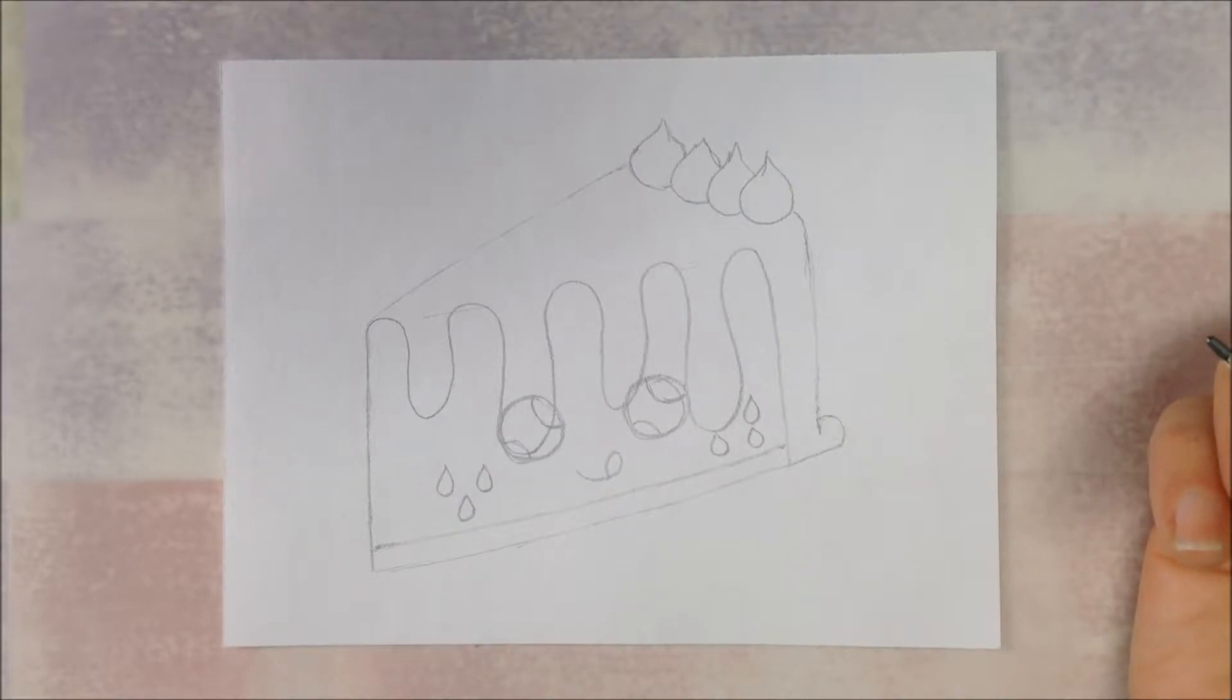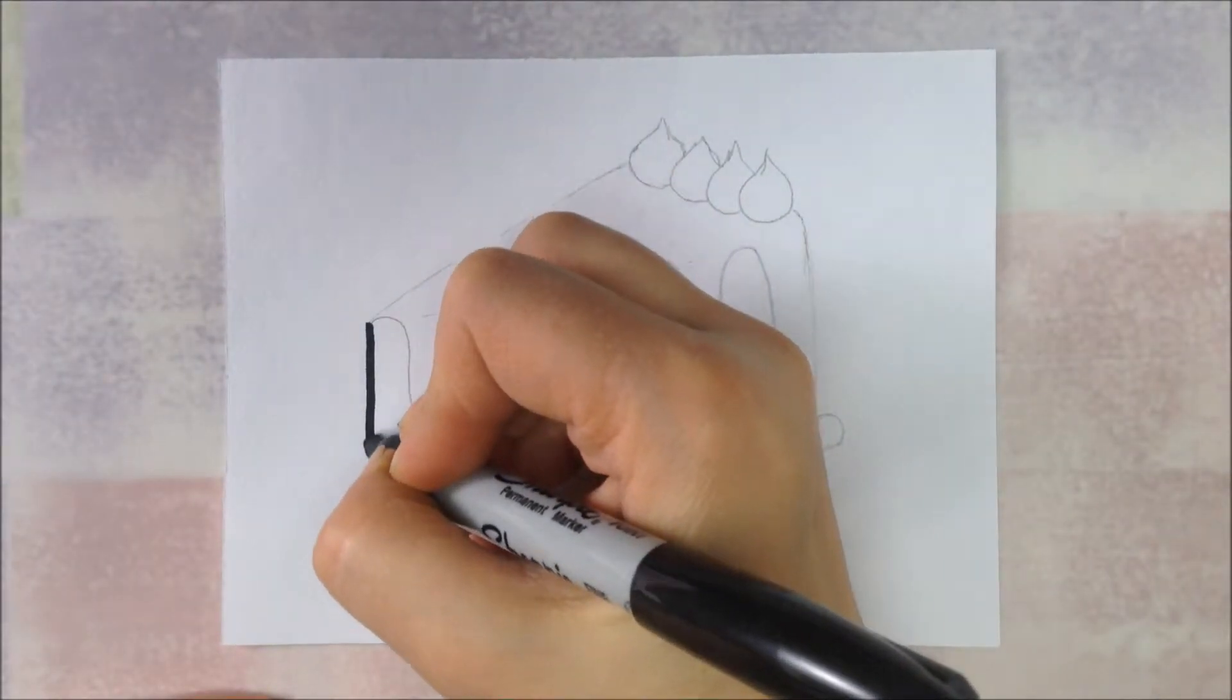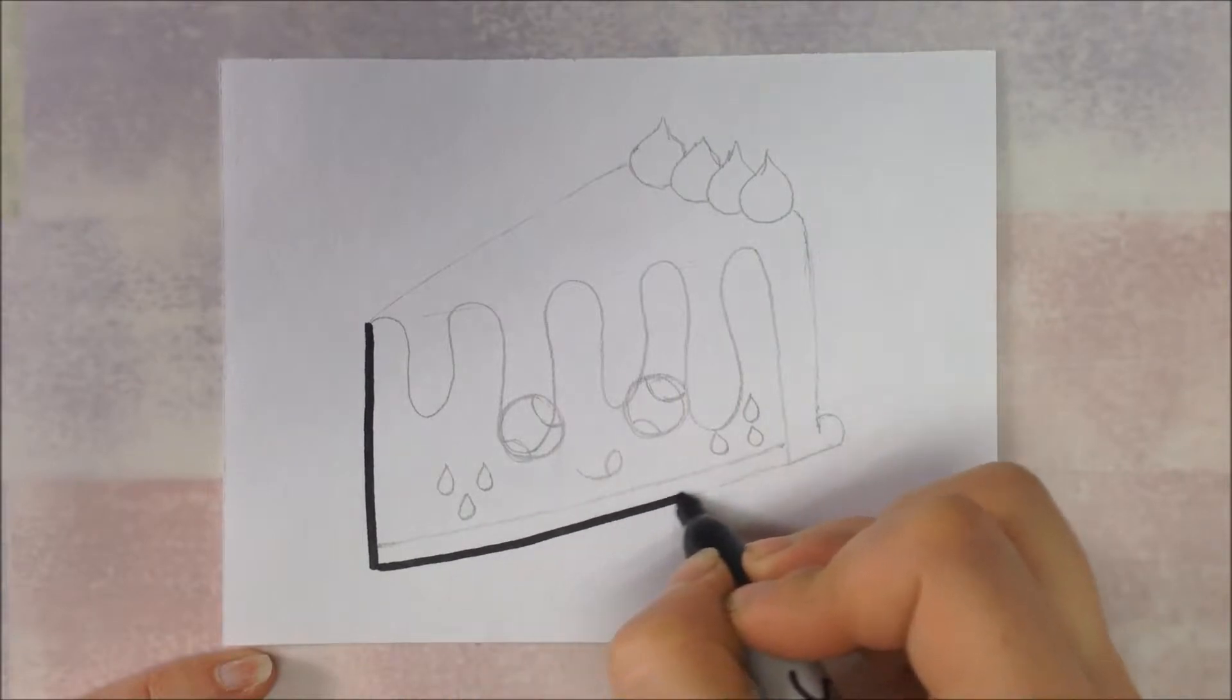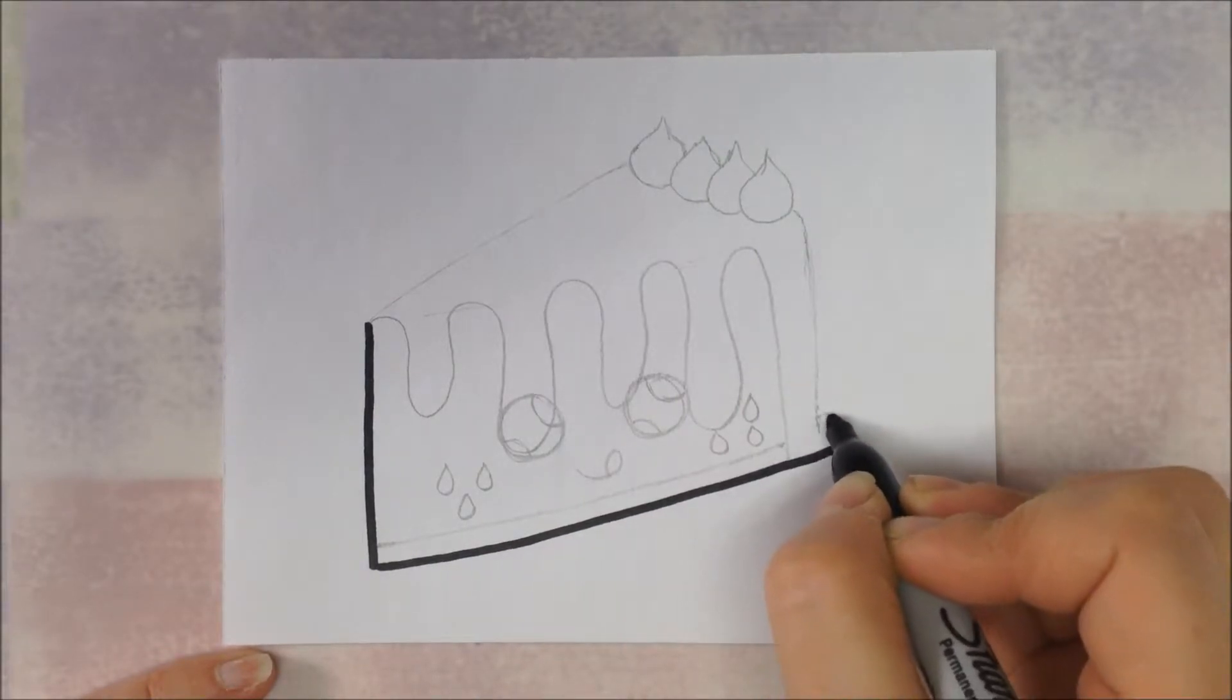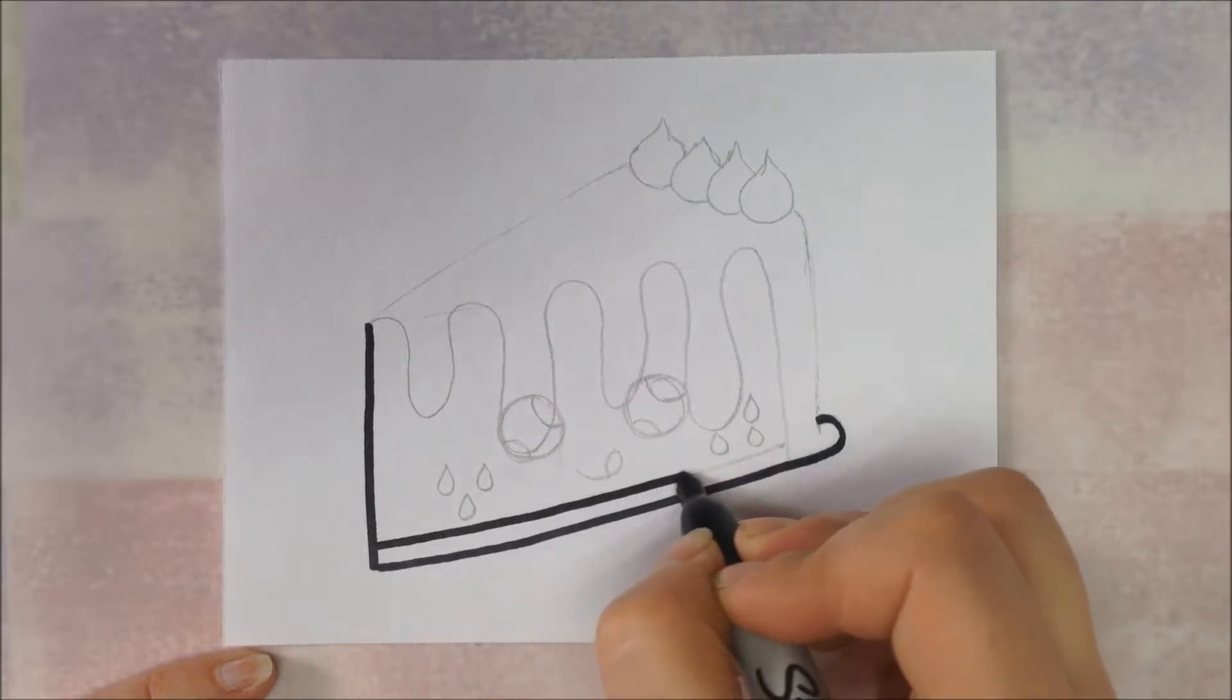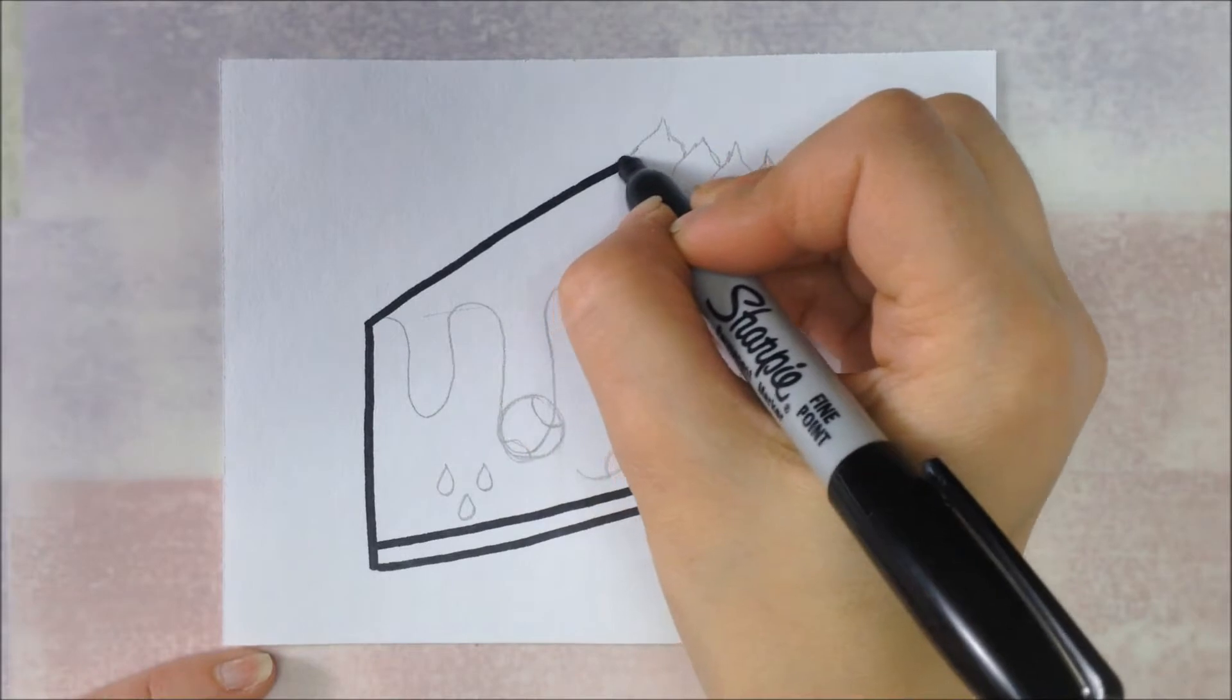And that's all we need to draw our watermelon cake. And now we're going to outline everything with black permanent marker. So I'm going to go around all of the cake. I'm going to do every pencil line that I have on this cake. For the rind, make sure you don't get too close to the bottom. You don't want it to close up because the permanent marker is a little thick.